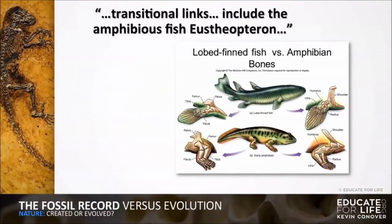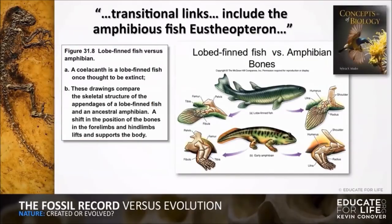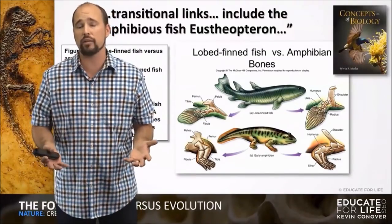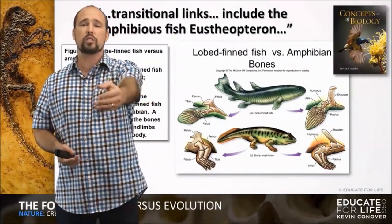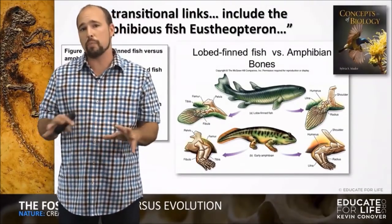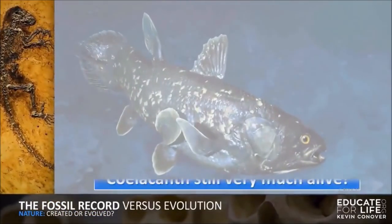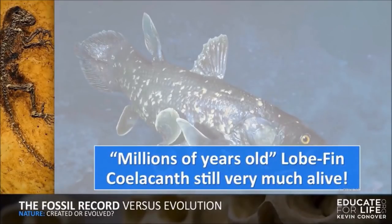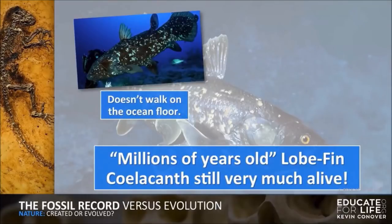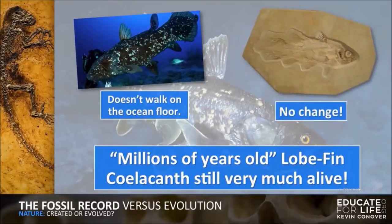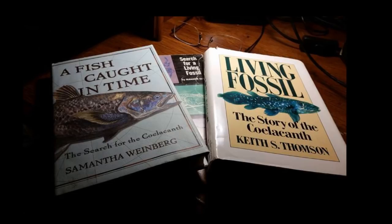Another one is what's called the coelacanth — a lobe-finned fish once thought to be extinct. They have fossils of these dated at millions of years old. In science textbooks they actually drew the coelacanth with legs on it. We've never found a coelacanth with legs, not even in the fossil record, but they said they believe this is what happened — that the coelacanth evolved into this creature, and they drew a picture and told kids this is what's happening. Today we have coelacanths that are alive — supposedly millions of years old, no legs, doesn't walk on the ocean floor, no change.